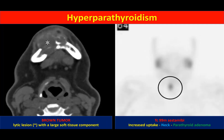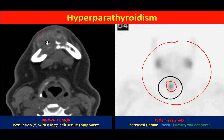A brown's tumor appears as a lytic lesion of the bone with a soft tissue component. In the same patient, a technetium-99m sestamibi scan shows increased uptake in the thyroid and parathyroid area, confirming a parathyroid adenoma. These are the imaging features seen in hyperparathyroidism, alongside the physiology of calcium and phosphate metabolism.